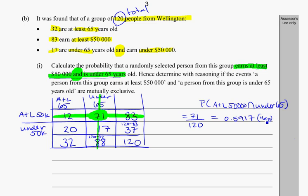Not too bad of a problem once you start to build up a two-way table for yourself. Remember that your totals will add up along a row or along a column, and from there you should be able to work it out.